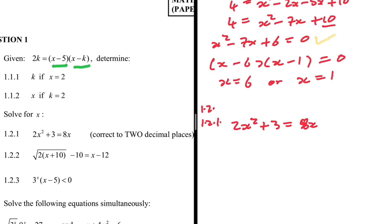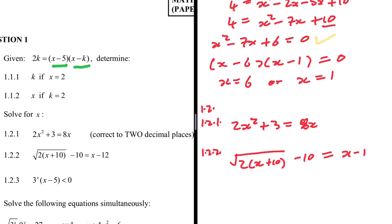For 1.2.1: 2x² + 3 = 8x, solve correct to two decimal places. We use the quadratic formula for that. For 1.2.2, something more interesting: √(2(x + 10)) - 10 = x - 12.